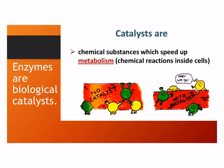Enzymes are what we call biological catalysts. A catalyst is a chemical substance that speeds up a chemical reaction inside a cell. So an enzyme speeds up reactions inside cells — reactions that help the cell and the body do what they need to do. We call this metabolism, your chemical reactions. Enzymes speed these things up.